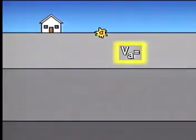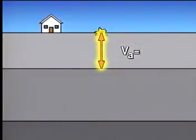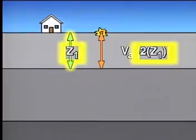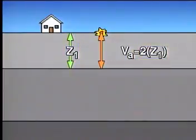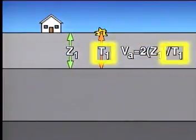Let's start with a simple Earth model and place the source and receiver at the same point on the surface. The average velocity of the seismic wave reflected from the first interface is equal to twice the thickness or depth of the upper layer Z1, divided by the two-way travel time, T1.